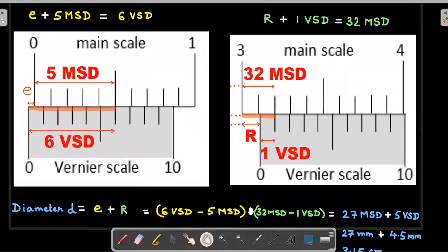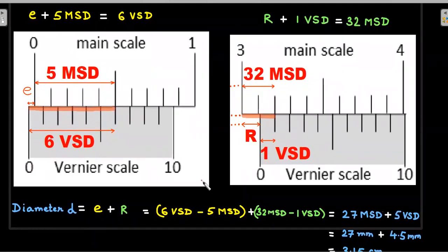Let me take it up here. If this e plus R, for e it is 6 VSD minus 5 MSD. So someone asks you what is the value of that error? This yellow one would have been the answer. Again, no formula, just derived from basics.